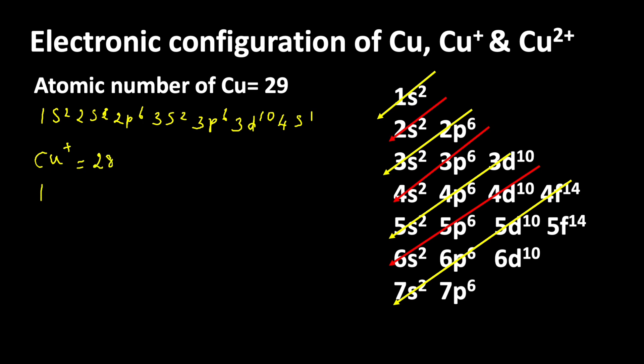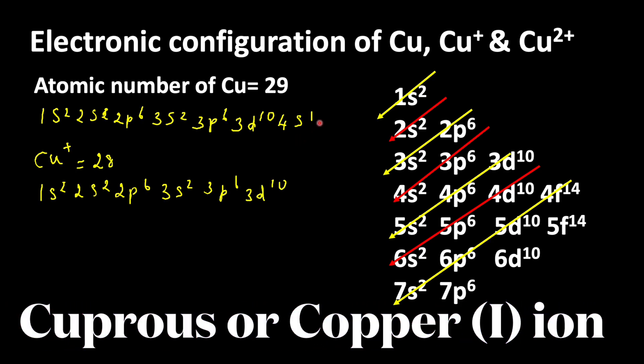Now let us write the electronic configuration: 1s2 2s2 2p6 3s2 3p6 then 3d10. Cu+ ion loses one electron from 4s orbital, which is the outermost shell in copper.